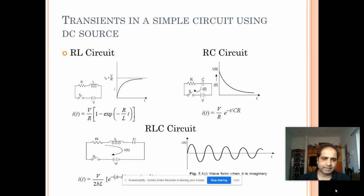Also for the RLC circuit, the three elements R, L and C are fed with a DC source and the curve or the nature of I of T versus T is as shown in the diagram and the formula for calculating I of T is as given in the slide.